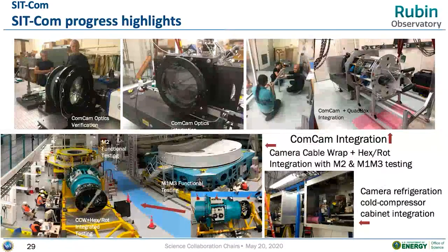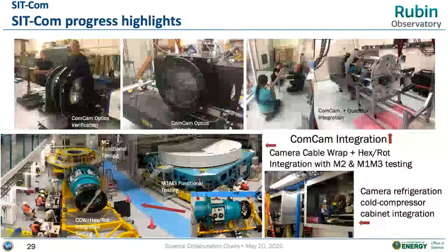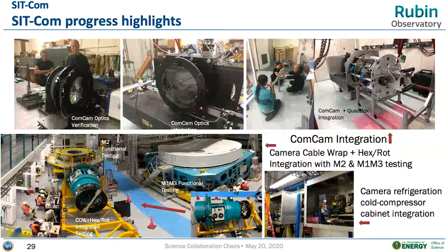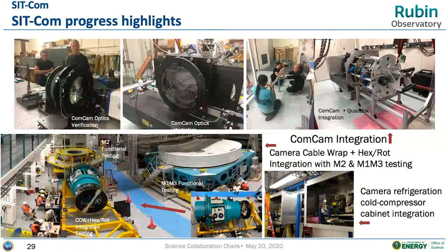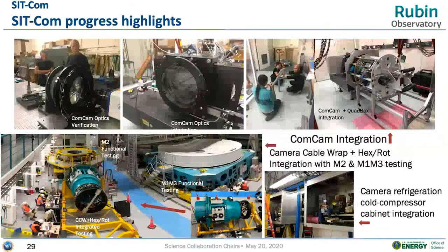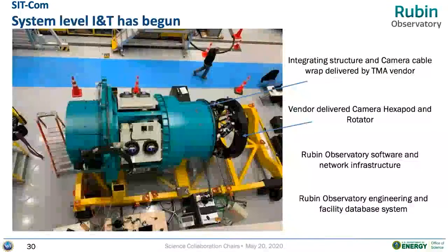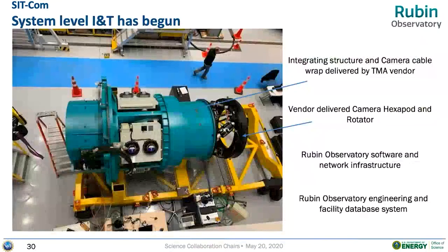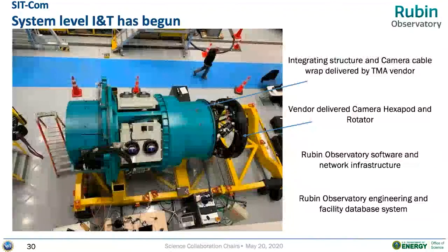The message on this chart is that the project velocity through the first part of 2020 was really quite excellent and exciting. The challenge for us is going to be restarting that velocity and picking it back up. We were testing the hexapod rotator and camera cable wrap on the cart — the actual assembly that will go on the telescope to first support ComCam and ultimately support the science camera.